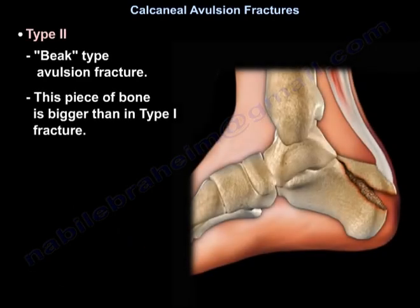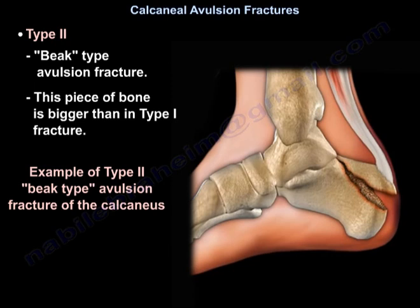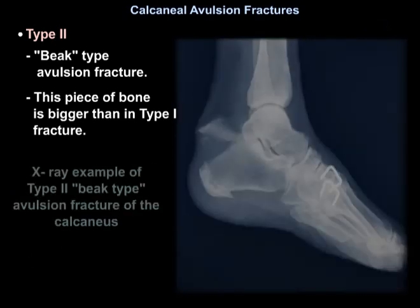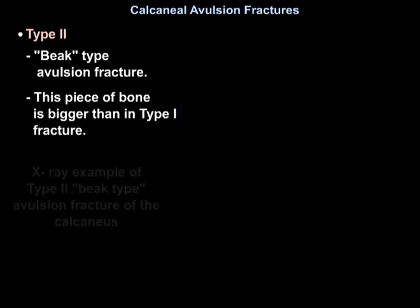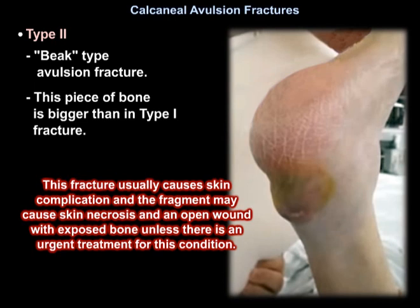Type 2 is a big-type avulsion fracture. This piece of bone is bigger than in Type 1. It usually causes skin complications — the fragment may cause skin necrosis and an open wound with exposed bone unless there is urgent treatment for this condition.